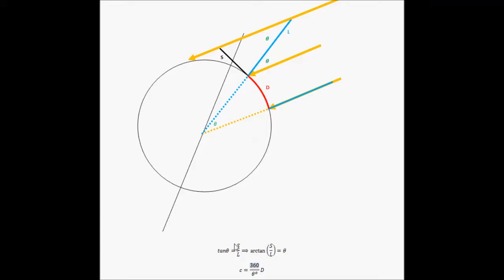I.e. 360 divided by theta in degrees multiplied by D. This is how you can measure the circumference of the Earth. Like I said, Eratosthenes first did this in about 200 BC, and it came up with an incredibly accurate measurement.